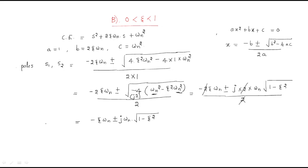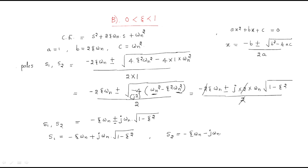So the two poles are: s1 = −ζωₙ + jωₙ√(1 − ζ²) and s2 = −ζωₙ − jωₙ√(1 − ζ²). These are the two poles we obtain when zeta is between 0 and 1.